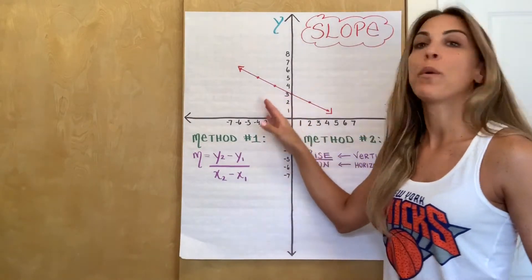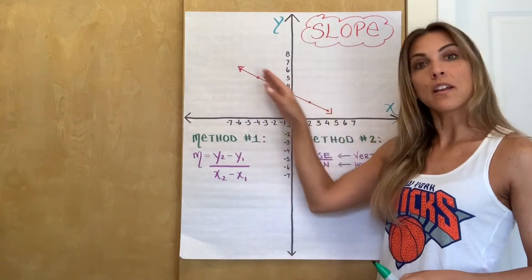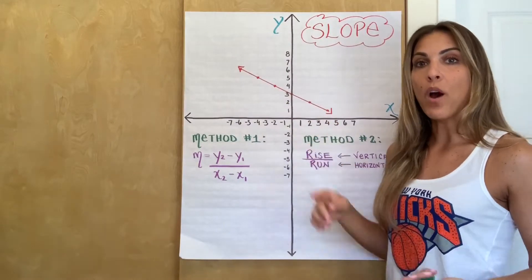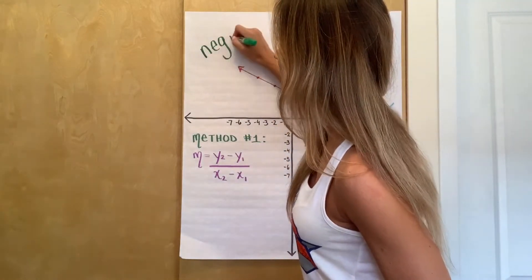So when you look at my red line, and you always read a line from left to right, this line is decreasing, it's going downwards, right? So any line that is decreasing, we automatically know from looking at that line that it's going to have a negative slope.